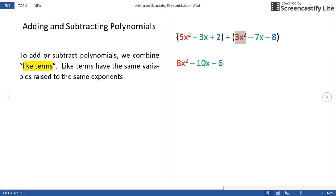So for the trinomials that are here, we can add together 5x² with 3x² since they are both x squares.